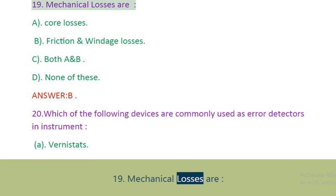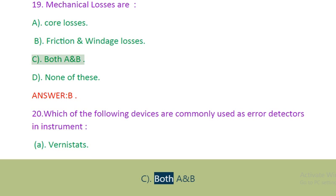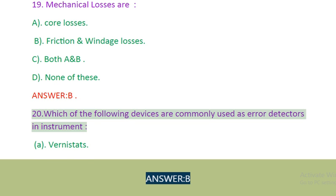Question 19: Mechanical losses are. A. Core losses. B. Friction and windage losses. C. Both A and B. D. None of these. Answer: B.